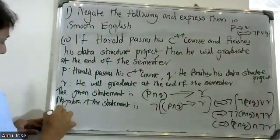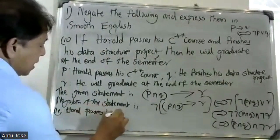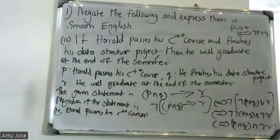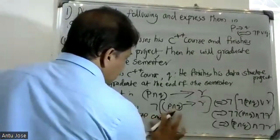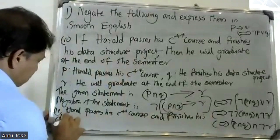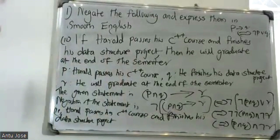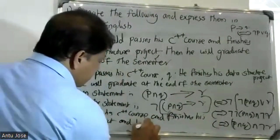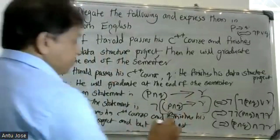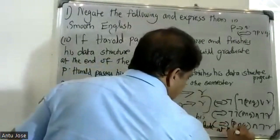That is: Harold passes his C++ scores and finishes his data structure project, but he did not graduate at the end of the semester.